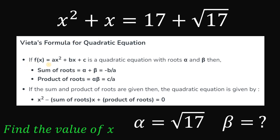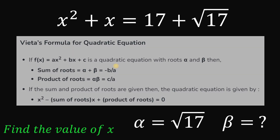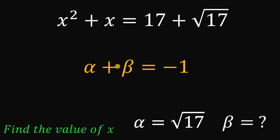To find beta, we will use Vieta's formula for quadratic equations. If we have f(x) equals ax squared plus bx plus c with roots alpha and beta, then the sum of the roots equals negative b over a. In our given equation, alpha plus beta must equal negative 1 over 1, which is simply negative 1.